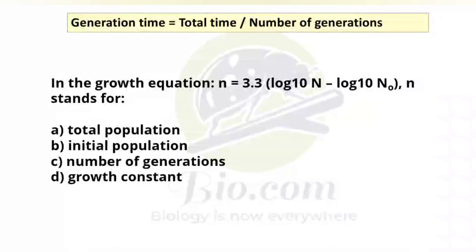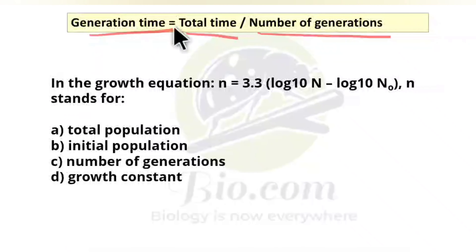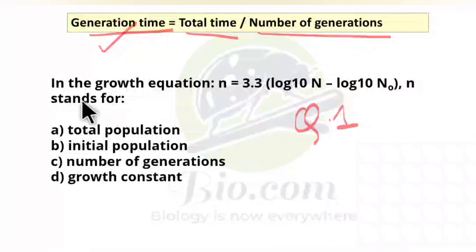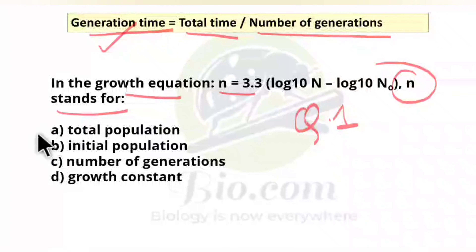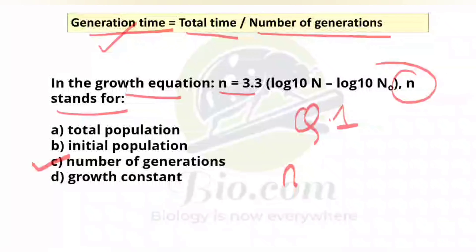Generation time is the ratio of total time and number of generations — if we divide the total time by the number of generations we get the generation time. Now let's quickly solve some questions. Question 1: In the growth equation n = 3.3 log₁₀ Nt − log₁₀ N₀, what does n stand for — total population, initial population, number of generations, or growth constant? We have learned that n denotes the number of generations, so the answer is option C.